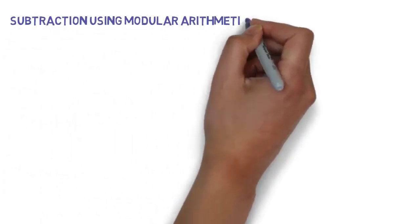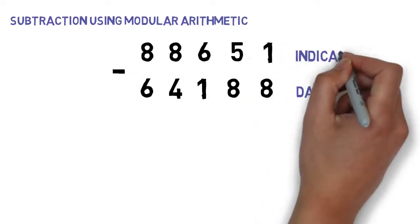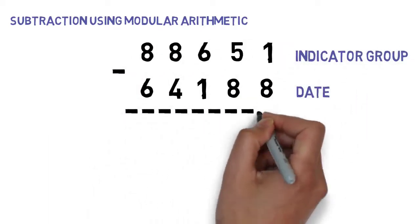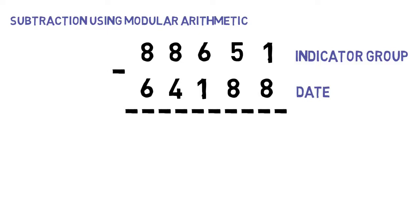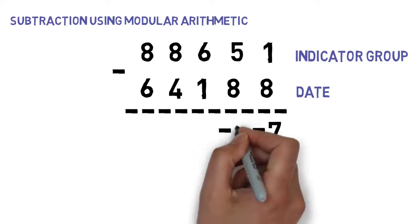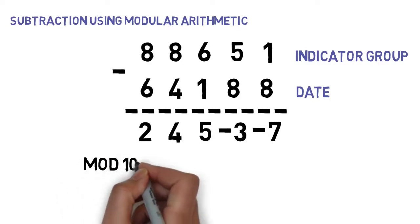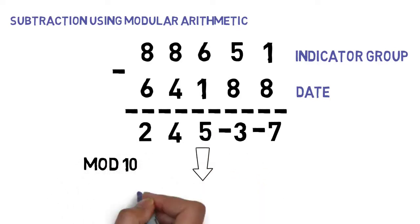We're going to start off by subtracting the first five digits of the date from the indicator group using modular arithmetic. That is to say that first, we're going to do digit-by-digit subtraction. So subtracting 8 from 1 would be negative 7, 8 from 5 negative 3, 1 from 6 a 5, and so on. Then we perform a mod-10 operation on each of the following digits, and we end up with the following sequence.